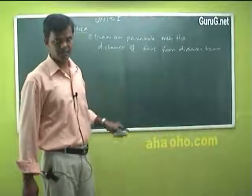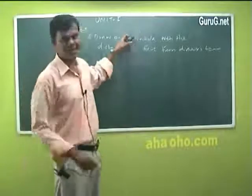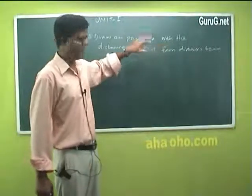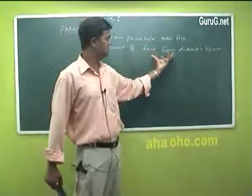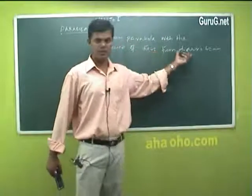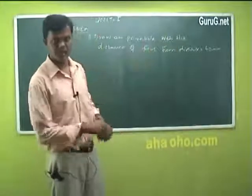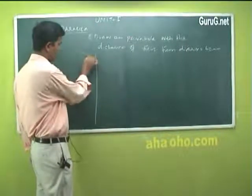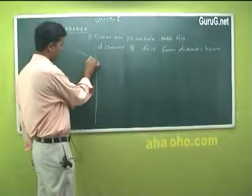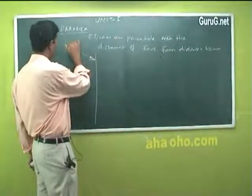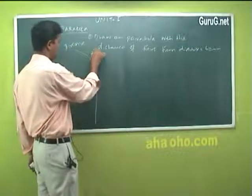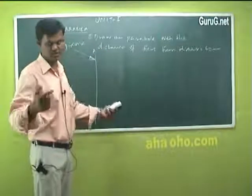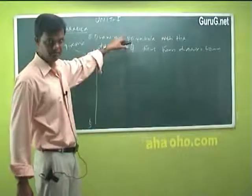Directrix is the one we draw first. To draw a parabola, you need only the distance between the directrix and the focus — whatever that distance is. Now, starting: you draw a directrix. This is your directrix — call it AB. You will not go for another directrix, as that is not required for a parabola.